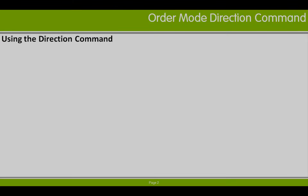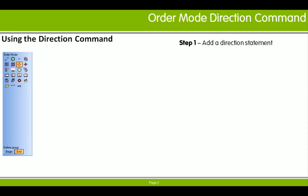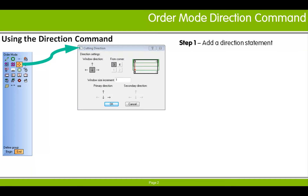The direction command is used to control the cutting direction in subsequent window punch and window profile commands. Adding a direction command statement to the order text can be done using the cutting direction command dialog, which contains various controls that allow you to specify the parameters to the direction command.